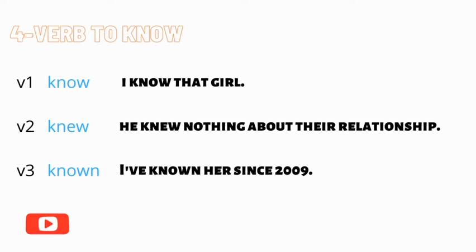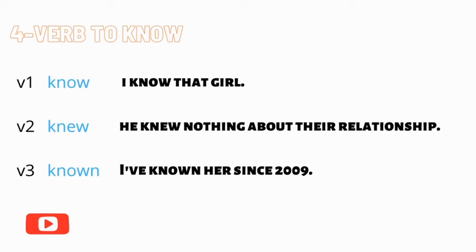Verb number four is 'to know.' The base form is 'know,' the past form is 'knew,' and the past participle is 'known.' Examples: 'I know that goal.' Past form — 'He knew nothing about their relationship.' Past participle — 'I have known her since 2009.' This verb is very important and we use it all the time, so it's good to know all three forms.